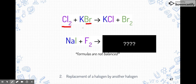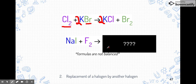So chlorine replaces bromine, giving potassium chloride and bromine gas (Br₂) — and notice bromine has a subscript 2 because it's diatomic. We need to balance this reaction, so we put a 2 in front of potassium bromide on the left and a 2 in front of potassium chloride on the right, making both potassium and bromine balanced on each side.